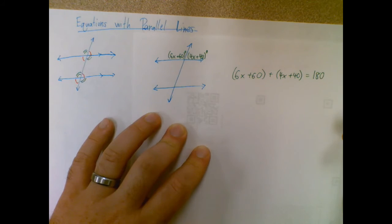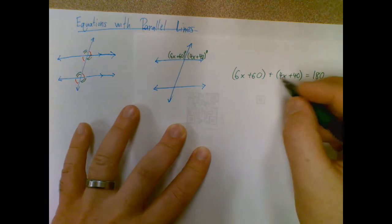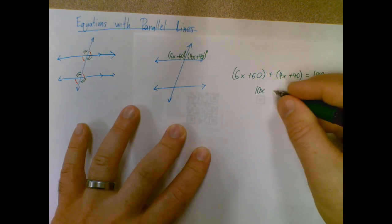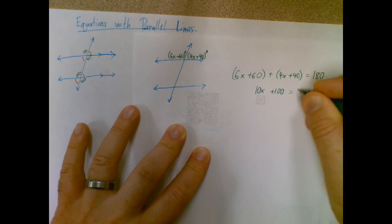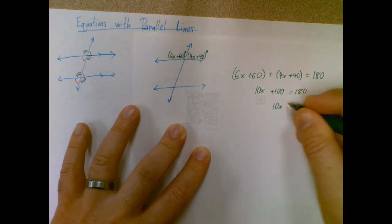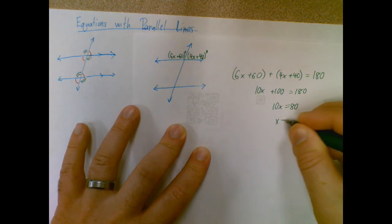Now I'm going to solve these. 10x plus 100 equals 180. Subtract 100 from both sides, we get 10x equals 80, so x equals 8.